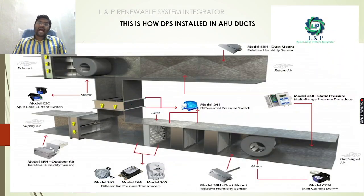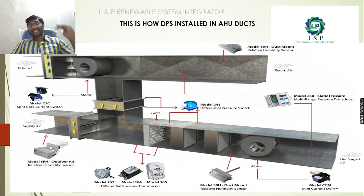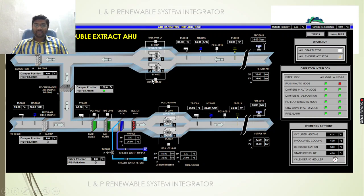In an air handling unit, differential pressure switches are installed across the supply side, return side, exhaust side, and recirculation side. The AHU has two filters — differential pressure switches are installed across these filters. If required, switches can also be installed across fans. Based on the application and pressure set point range, we choose the appropriate differential pressure switches. The schematic shows panel filter and bag filter installations with differential pressure switches in healthy ranges, along with fan flow monitoring on both supply and exhaust sides.